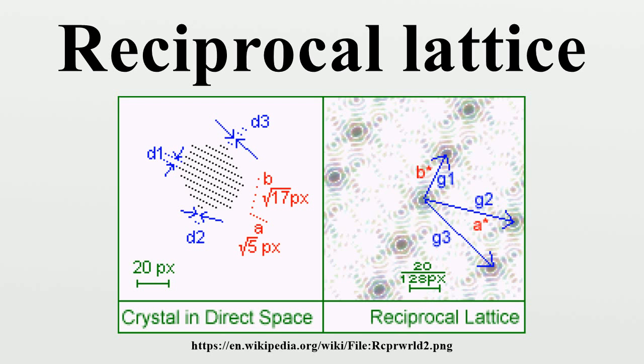Reciprocal lattices for the cubic crystal system are as follows. Simple cubic lattice: The simple cubic Bravais lattice with cubic primitive cell of side a has for its reciprocal a simple cubic lattice with a cubic primitive cell of side 2π/a.